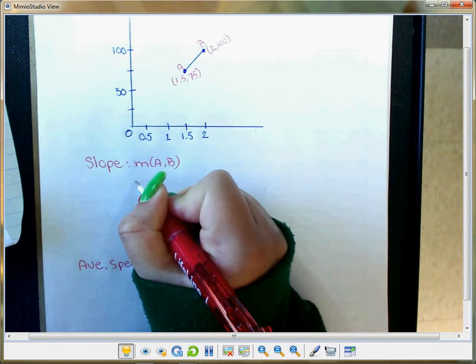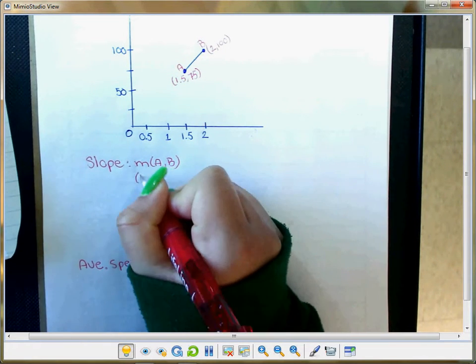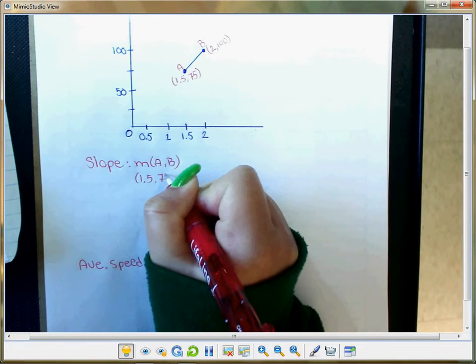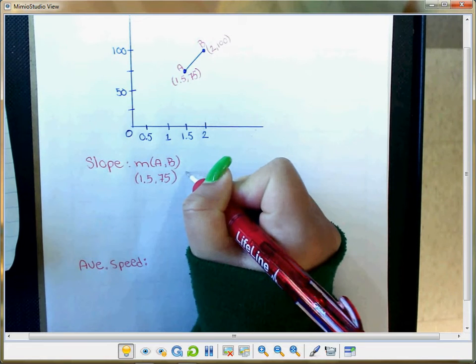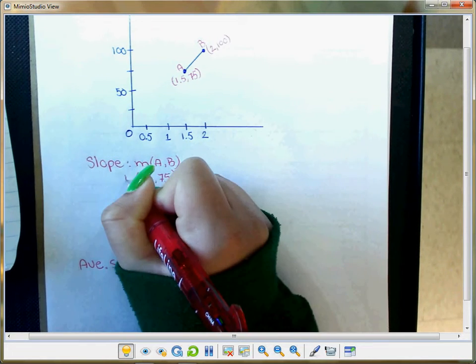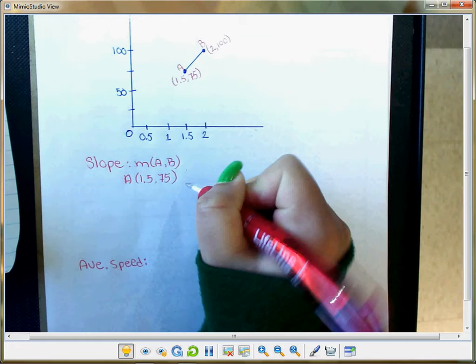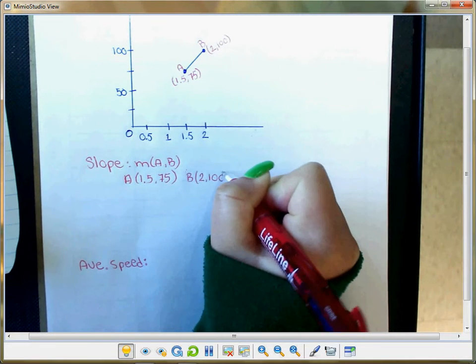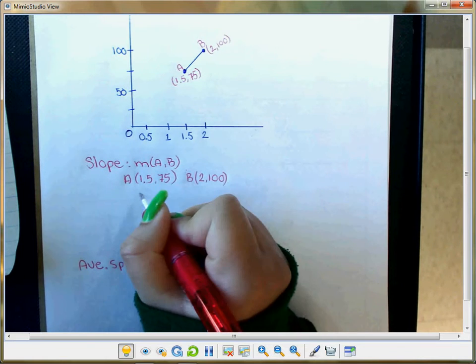Point A is at 1.5 and 75, and point B is at 2 and 100. So you have to find the slope.